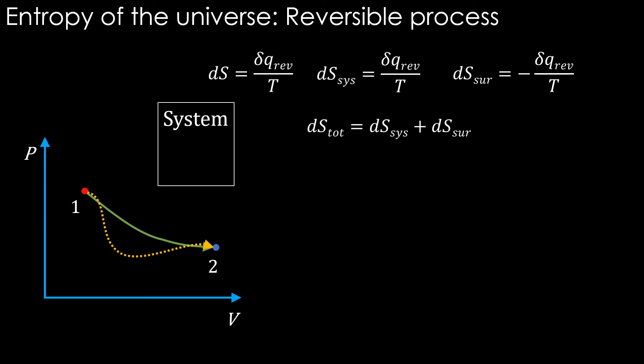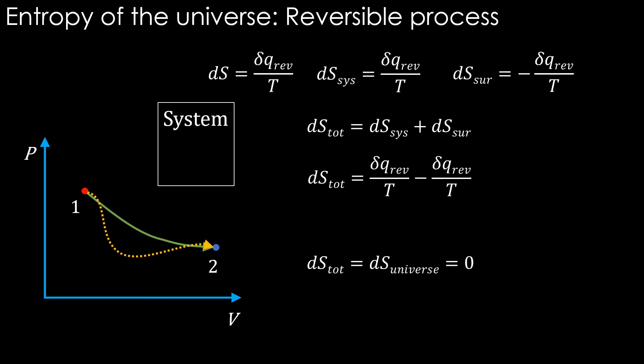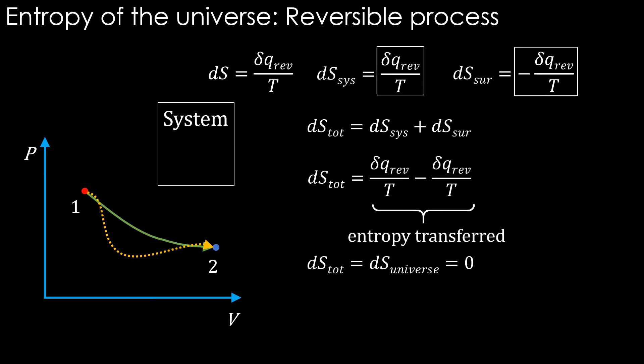dS_total is equal to dS_system plus dS_surrounding, and the summation is zero. Observe this: the entropy of the surrounding decreases by some amount, and the system's entropy increases by the same amount, as if the entropy is transferred from the surrounding to the system. Therefore, this entropy is the entropy transferred.